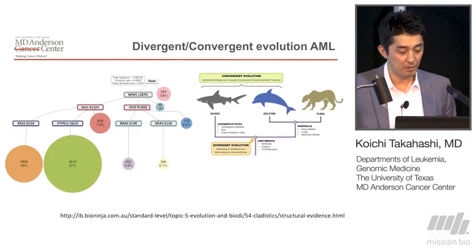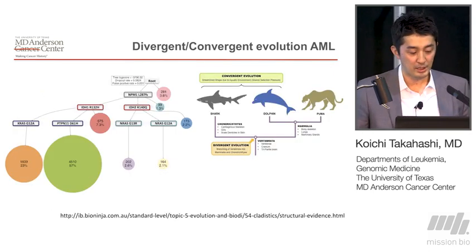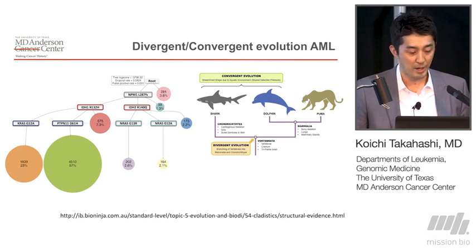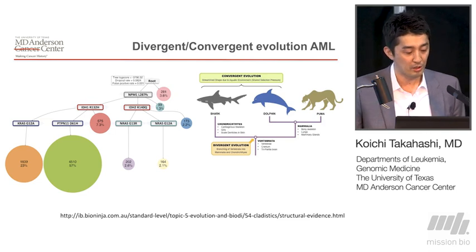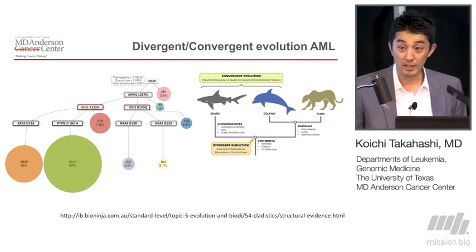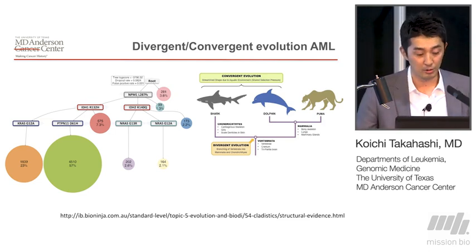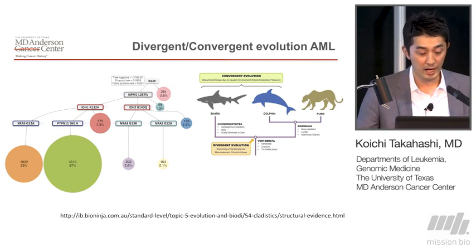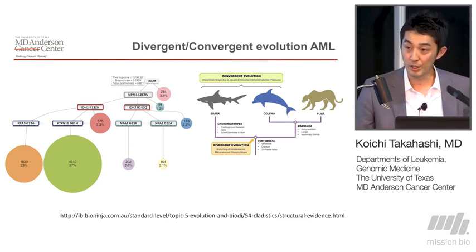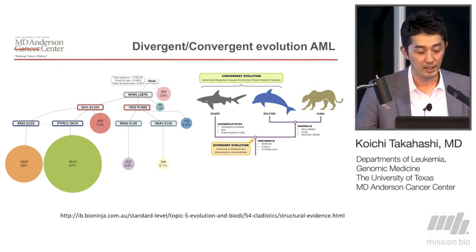This case really represents this divergent and convergent evolution pattern, which was really fascinating. After acquiring this NPM1 mutation, this clone decided to separate into two different branches, but each branch acquired IDH1 and IDH2 mutations independently.